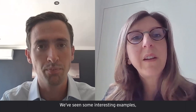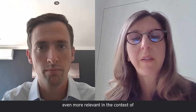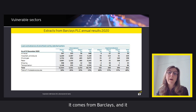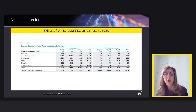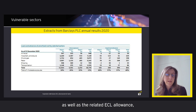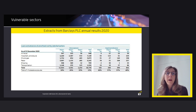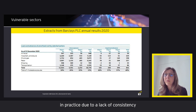This has become even more relevant in the context of this crisis and is a key factor in understanding a bank's exposure. A good example comes from Barclays, showing gross carrying amounts of loans and advances at amortised cost for selected sectors split by stage, as well as the related ECL allowance, and the percentage of total wholesale exposures — a useful indicator of concentration. The information is very clear and insightful to track over time.